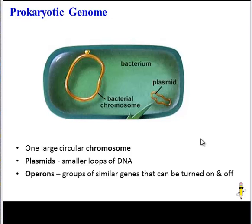Operons are groups of similar genes that can be turned on or off depending on the environment. So here's an operon — a cluster of genes. Here's another operon. And even on the plasmid we can find operons. Let's take a look at the structure of an operon.